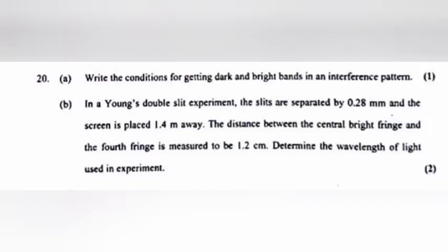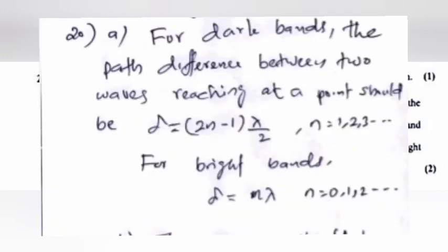Question 20a: Write the conditions for getting dark and bright bands in an interference pattern. Answer: For dark bands, the path difference between two waves reaching a point should be d = (2n−1)π/2, where n = 1, 2, 3, etc. For bright bands, d = nπ, where n = 0, 1, 2, etc.